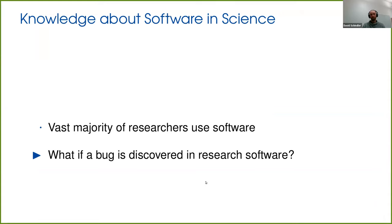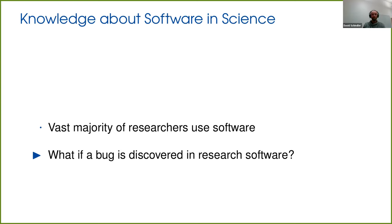A vast majority of scientists are using and requiring software for their research. It's important to know about when and how scientists use software. For instance, consider this case: what if a bug is discovered in a research software? This would mean that potentially all research done with the help of that software could be biased. We would need to alert all authors of the bug — ideally all authors using a specific version — so they could update their software, check all results, and make sure they were not influenced.